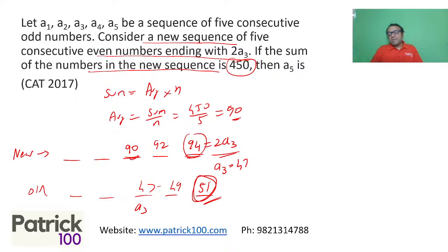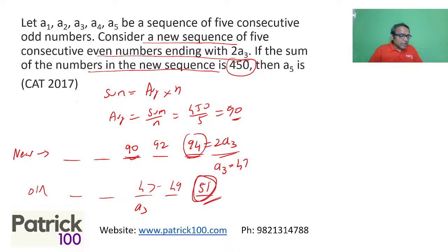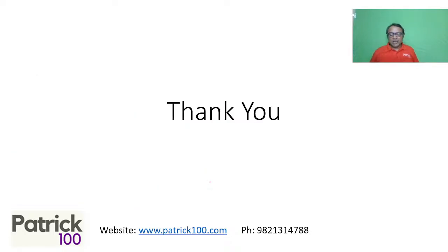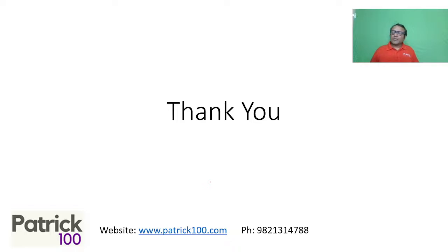a3 = 47 is the middle term of the original odd sequence a1 to a5. Since a3 is the middle number and we want a5 — the last term — in consecutive odd numbers: 47, 49, 51. So a5 = 51. The idea is always to find the middle term by starting with the average. Good techniques help you be fast, and when you're used to them you'll crack the examination. We take up concepts every Thursday at 9:30 — previous videos are on YouTube.